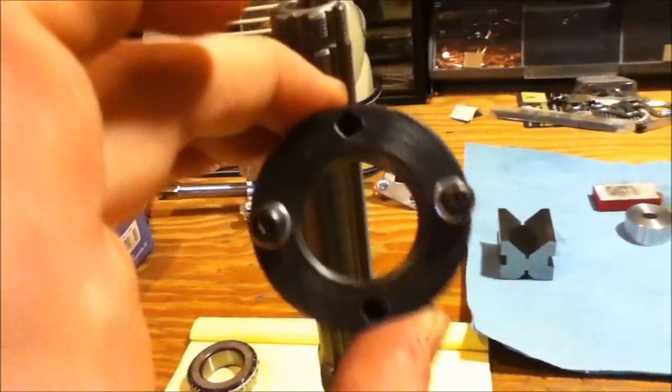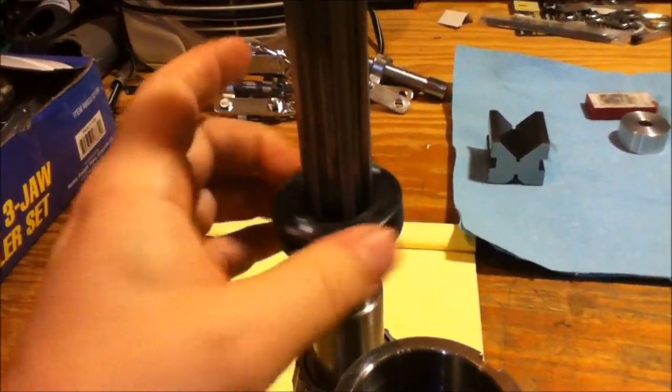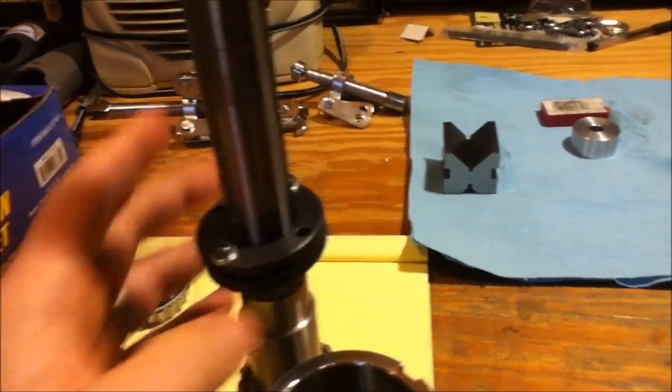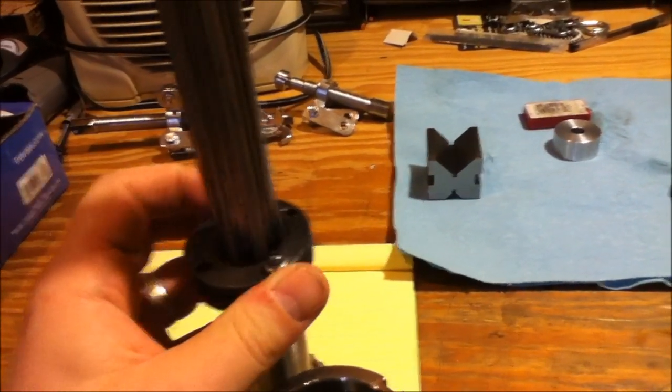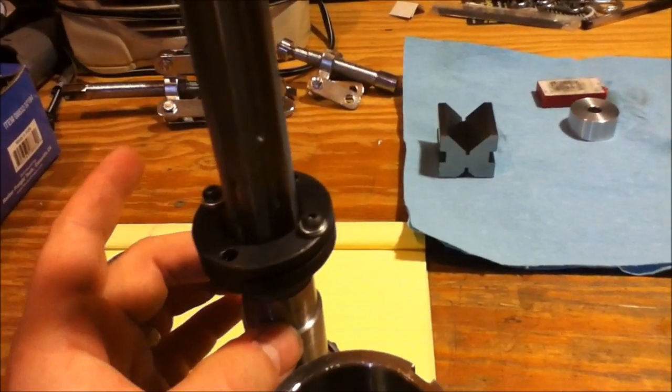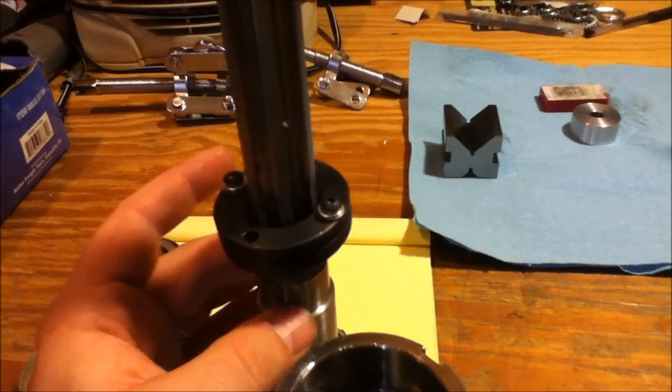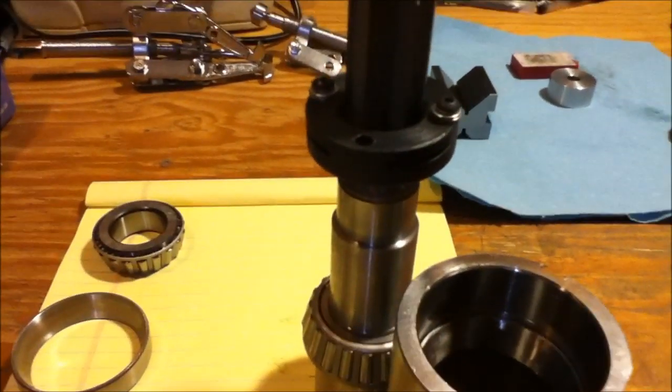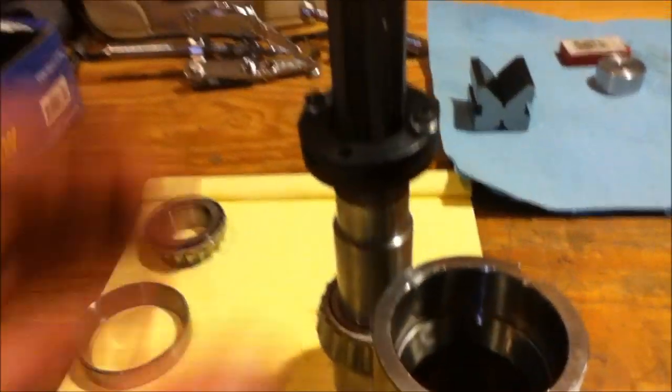And then this nut goes onto your shaft, screws down, and applies pressure to the inside race of the bearing at the top. So you've got it, you're pinching those bearings together. But that's the basics of it.